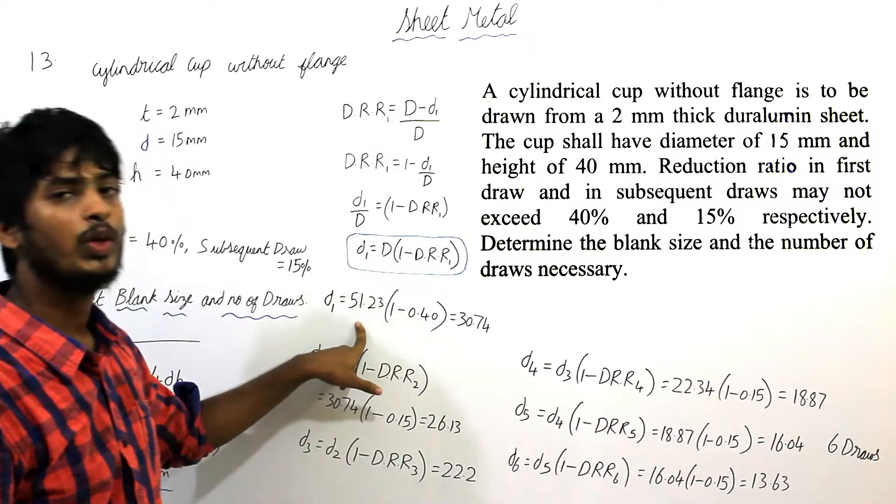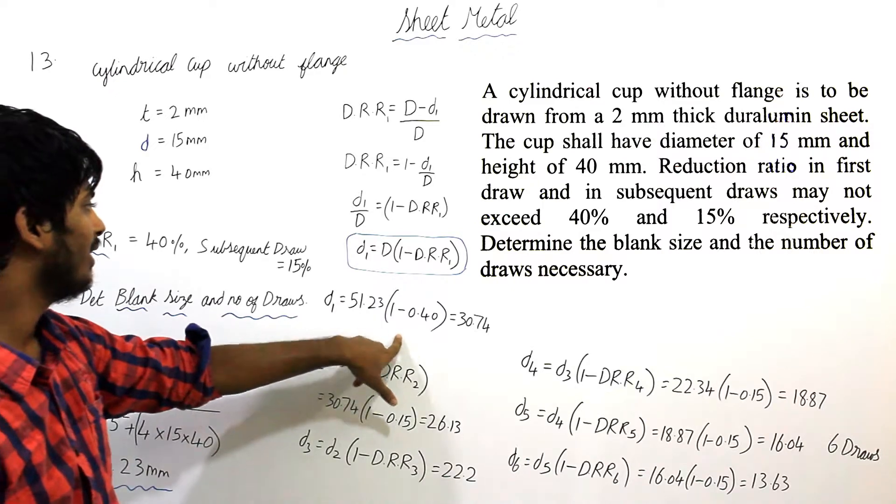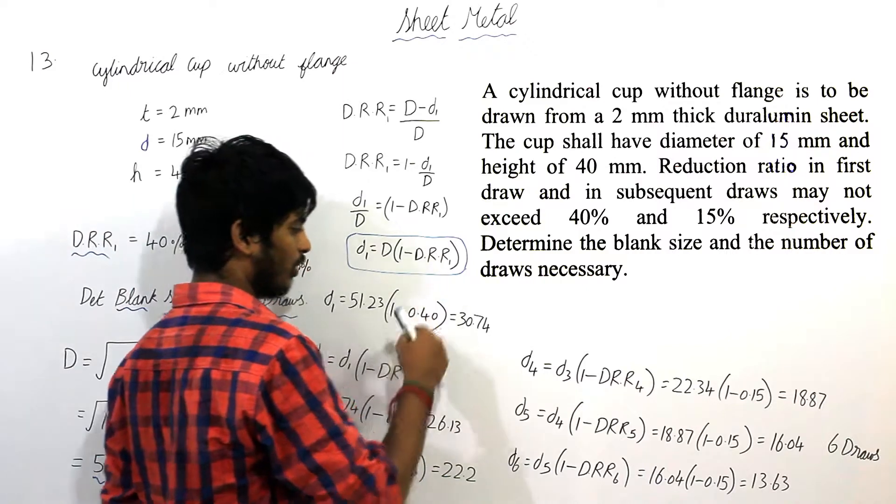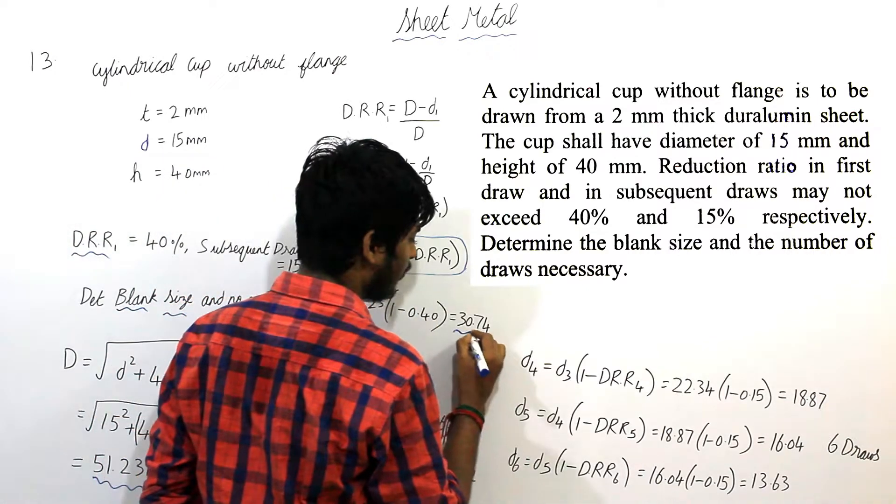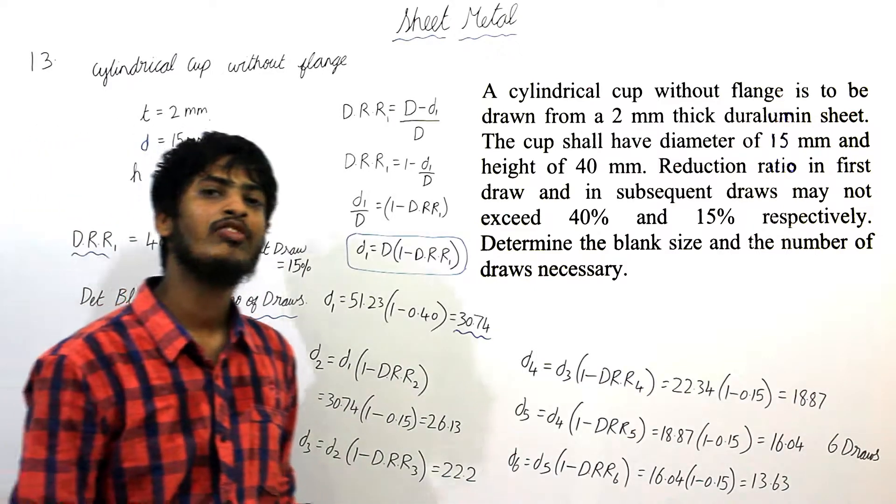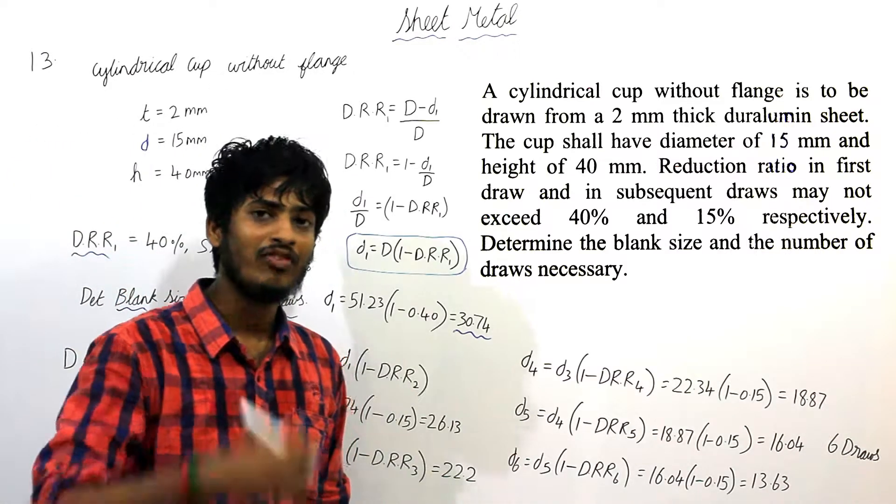d1 is equal to 51.23 into 1 minus DRR1 is 40% for first draw. I am taking this 0.40. Finally, I am getting 30.74. This 30.74 is final diameter of the blank after the first draw.